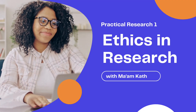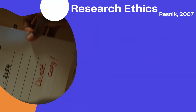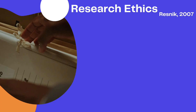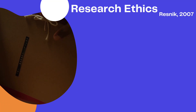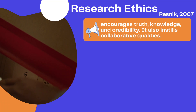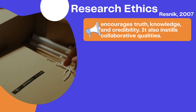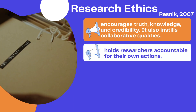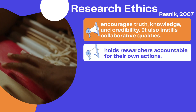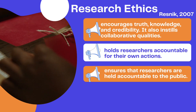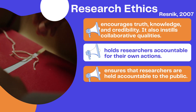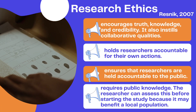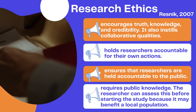Why do we have to know the different ethics of research? What is the importance of research ethics? According to Resnick in 2007, research ethics encourages truth, knowledge, and credibility. It also instills collaborative qualities. Research ethics holds researchers accountable for their own actions and ensures that researchers are held accountable to the public. Lastly, it requires public knowledge — the researcher can assess this before starting the study because it may benefit a local population.